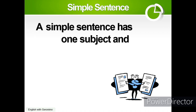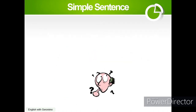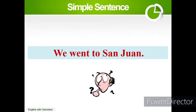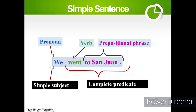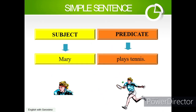Now let's proceed with the simple sentence. A simple sentence has one subject and one predicate — always remember: one subject and one predicate. Let's have an example: 'We went to San Juan.' Here, 'we' is the subject, it is a pronoun; 'went' is a verb; 'to San Juan' is a prepositional phrase and is considered the predicate.